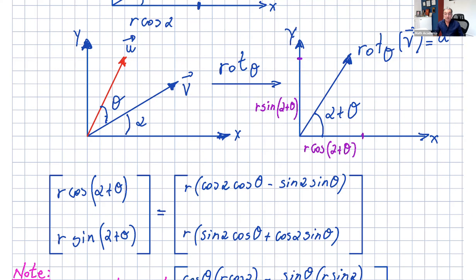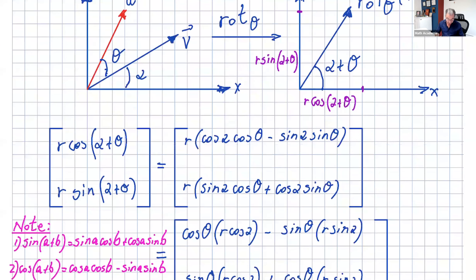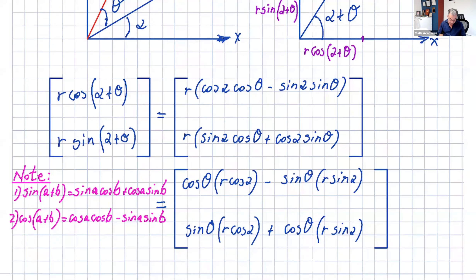Let's write that in matrix notation. We have r cosine(alpha + theta) and r sine(alpha + theta). From trigonometry, we know that sine(a + b) = sine(a)cosine(b) + cosine(a)sine(b), and cosine(a + b) = cosine(a)cosine(b) − sine(a)sine(b). Applying that here, r cosine(alpha + theta) can be written as r times cosine(alpha)cosine(theta) minus sine(alpha)sine(theta).